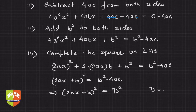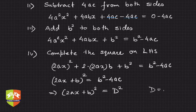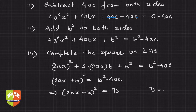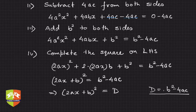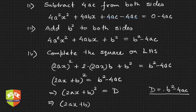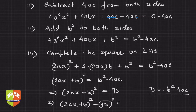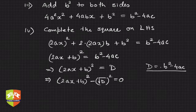Let us call the right-hand side D, where D = b² − 4ac. You will later see this is called the discriminant. So we can write (2ax + b)² = D, which implies (2ax + b)² − (√D)² = 0.